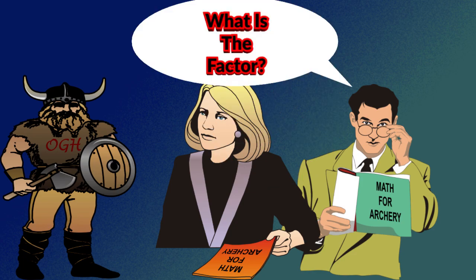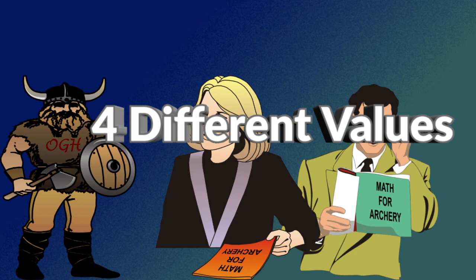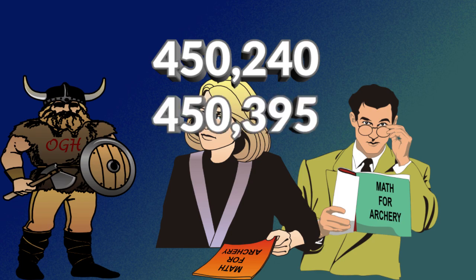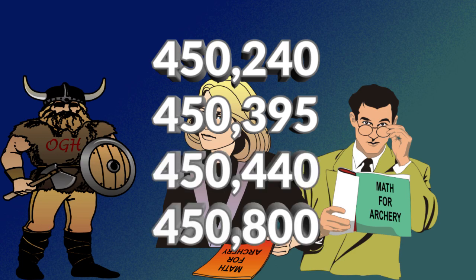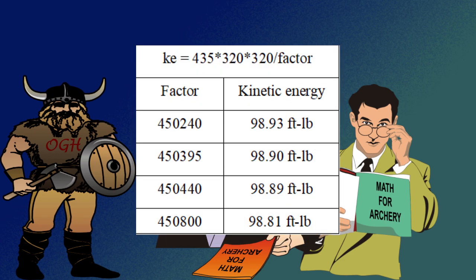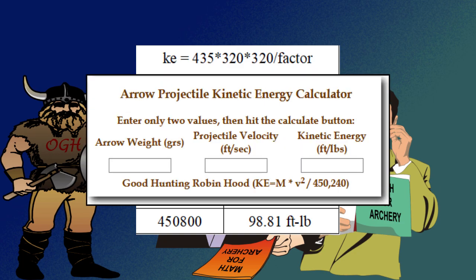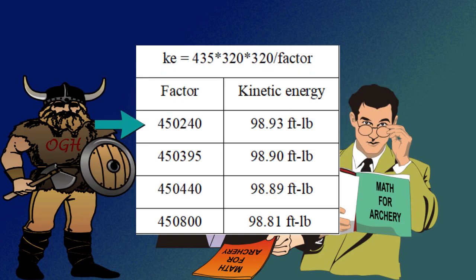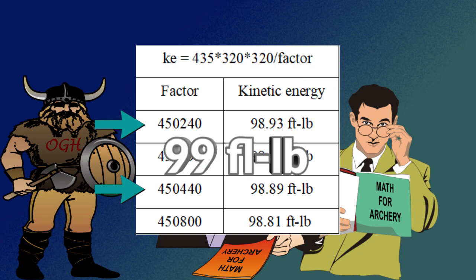So what is the factor? I have found a minimum of four different values being used: 450,240; 450,395; 450,440; and 450,800. I have been using 450,240 in my videos only because it appears to be the most common on the net. The online ballistic calculators I've tested mostly use 450,440 give or take as the factor. I'm not sure the factor you use really matters because when rounding to the nearest integer they all equal 99 foot pounds.